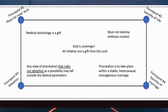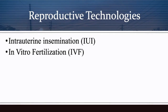This graphic visualizes the fence posts on the corners: number one, place for medical technology; number two, sanctity of life; number three, adoption; number four, sanctity of marriage. If we stay within these boundaries, the medical technology used should not have moral, ethical, or biblical issues. The points inside the box include: medical technology is a gift, must not destroy embryos, procreation must rule in adoption as a possibility, procreation within a stable heterosexual monogamous marriage, and God is sovereign.